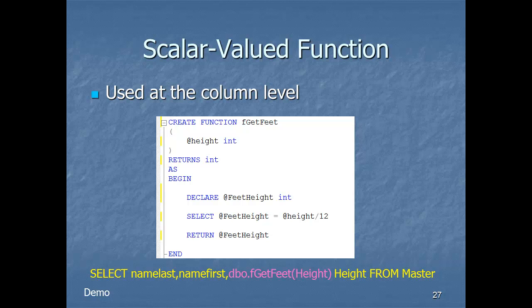Looking at the scalar function code: we declare function fget_feet receiving an undefaulted integer parameter @height. We declare only the return data type — RETURNS INT. Then within AS BEGIN, we declare the variable @feetheight as integer, SET @feetheight = @height / 12, and RETURN @feetheight from the function. This is simple, but we could pass parameters into another table or do all kinds of things within here.